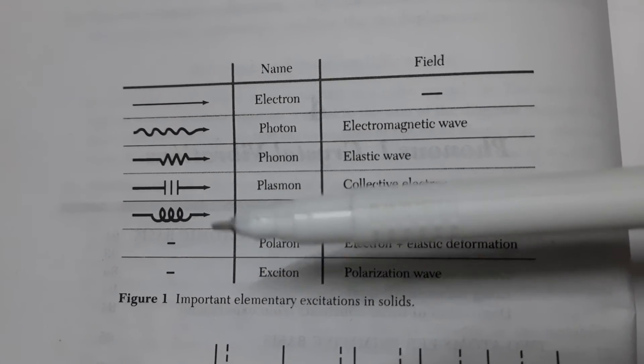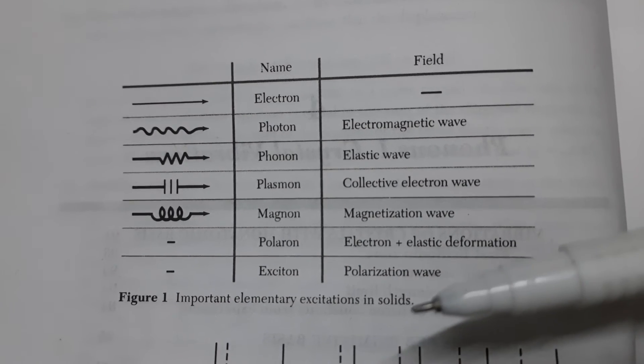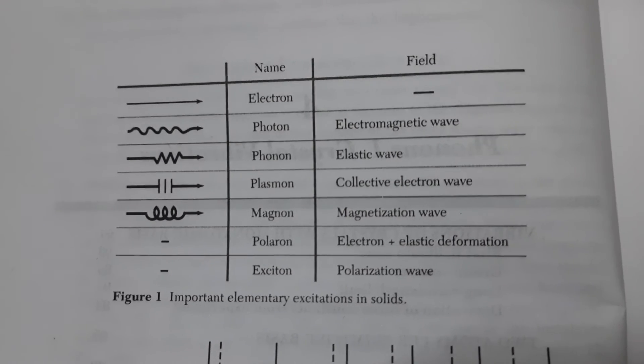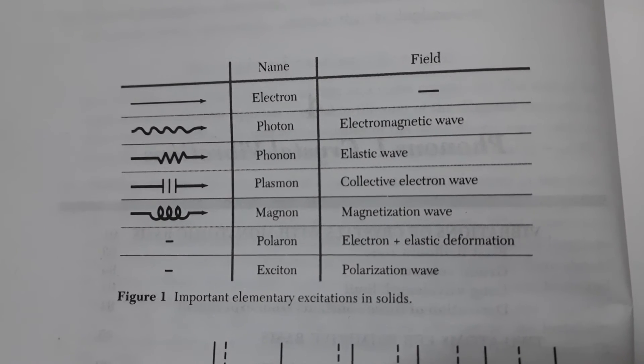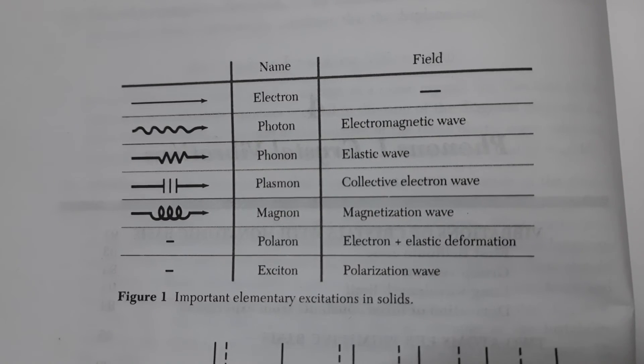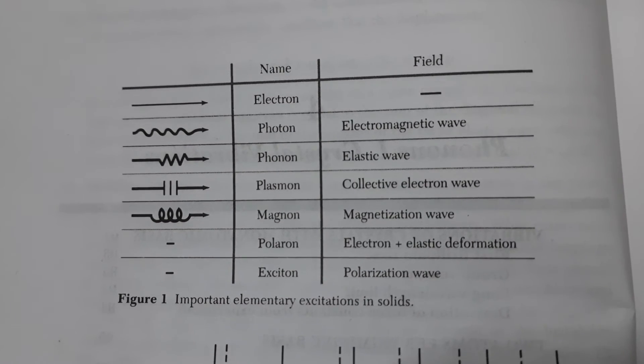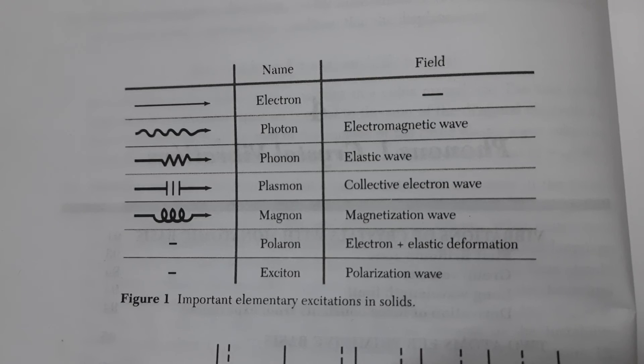Polaron is electron plus elastic deformation. Here we consider both the electron and the phonon interaction. Exciton is the polarization wave.